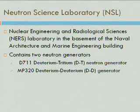The location where we have been conducting our research is the Neutron Science Laboratory, which is in the basement of the Naval Architecture Building. There are two generators within the building. The D711 DT Neutron Generator shoots out neutrons at approximately 14 mega electron volts, and the MP320 DD Generator shoots them out at 2.45 mega electron volts. I will be using the DD Generator.